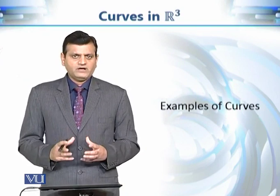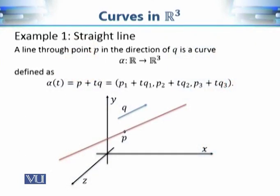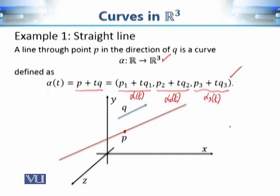Consider a very simple example: a straight line. A straight line is a one-dimensional object and we can find the corresponding function alpha as follows: alpha(t) = p + t·q, where q is the vector parallel to the line and p is a point through which the line passes. So the first coordinate function is alpha₁(t) = p₁ + t·q₁, the second is alpha₂(t) = p₂ + t·q₂, and the third is alpha₃(t) = p₃ + t·q₃. These are linear polynomials in t, hence differentiable, so by our definition a straight line is a curve in R³.